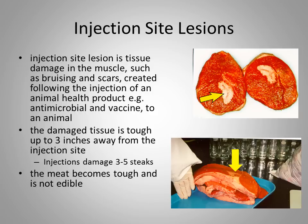Injection site lesions refer to tissue damage in the muscle or the beef that are created by injecting an animal health product into the muscle, such as an antibiotic or a vaccine. This creates bruising and scar tissue that does not resolve over time; in fact, the tissue becomes tough up to three inches away from the injection site. If you look at the picture on the top right, that is the eye of round steaks, and that white lesion by the yellow arrow is actually scar tissue created by injecting in the back thigh of an animal.